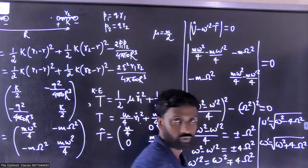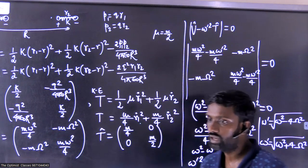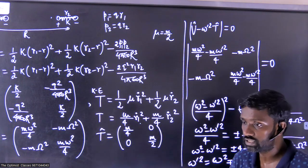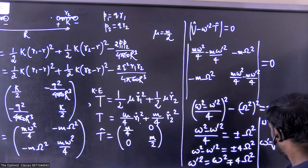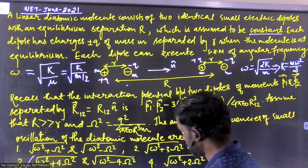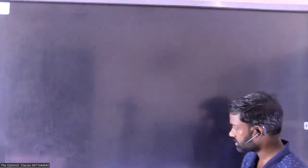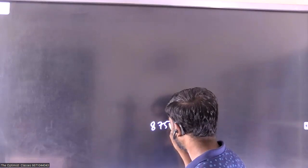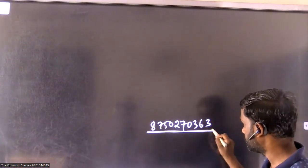So that's the solution. Option 3 is the correct answer: sqrt(ω² + 4Ω²) and sqrt(ω² - 4Ω²). I haven't solved this using the force method — you can try that approach as well, though it's less straightforward. If you have any comments or queries, you can WhatsApp me at 8750270363.